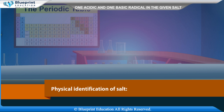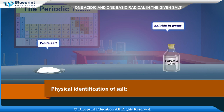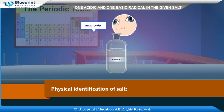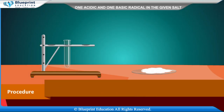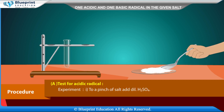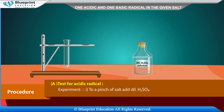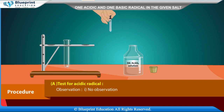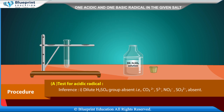Physical identification of salt: white salt, soluble in water, ammonia-like odor. Procedure — test for acidic radical: to a pinch of salt, add dilute H2SO4. Observation: no observation. Inference: dilute H2SO4 group absent, i.e., CO3 2-, S2-, NO2-, SO3 2- are absent.